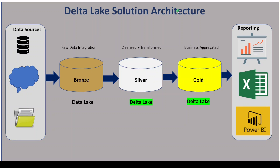Now let's move to Delta Lake architecture. This is also quite similar but there are some minor differences. The first difference is in Delta Lake architecture we are calling the layers Bronze, Silver, and Gold. In data lake we used to have raw, curated, and serving layers, but in Delta Lake architecture we call them Bronze, Silver, and Gold. That is one difference.